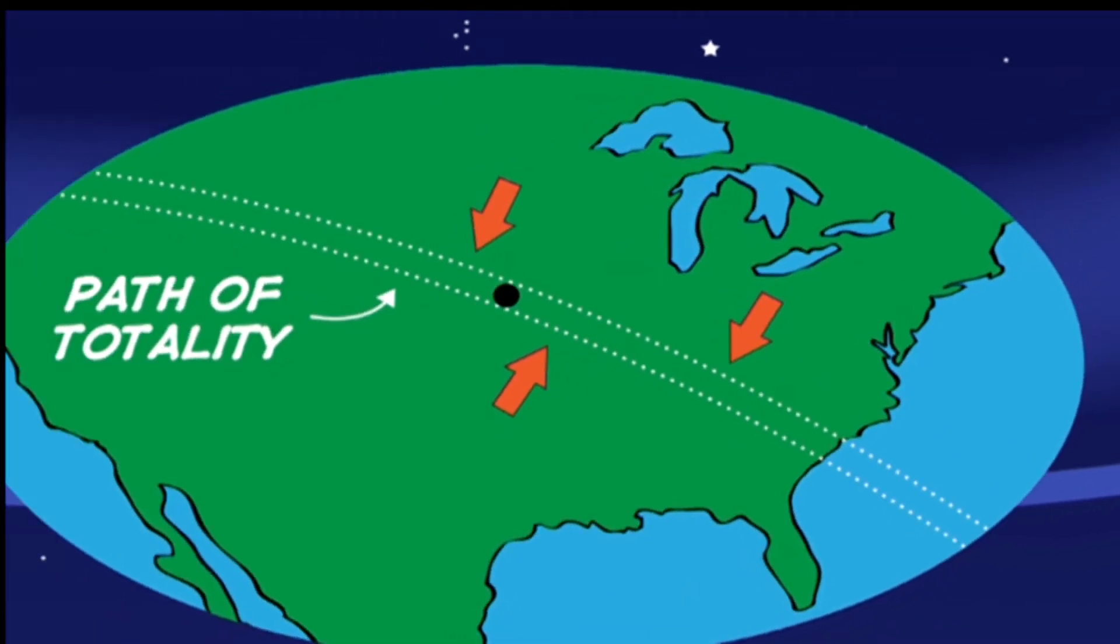As the moon blocks the Sun's light, it casts a shadow on part of the Earth. The moon's shadow creates a path as Earth rotates. This path is called the path of totality. If you want to experience total darkness during an eclipse, you have to be in the path of totality.